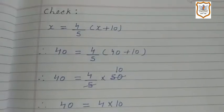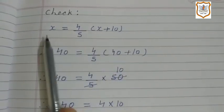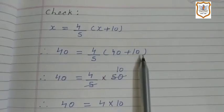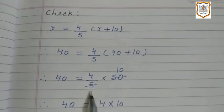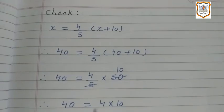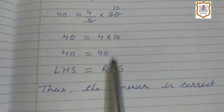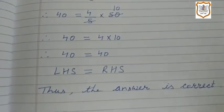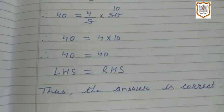Now we check our result. The equation is x = (4/5)(x + 10). We put x = 40. So we write 40 = (4/5)(40 + 10). 40 + 10 = 50. So 40 = (4/5) × 50. 50 divided by 5 is 10, so 40 = 4 × 10 = 40. So 40 = 40. Left hand side equals right hand side, thus the answer is correct. Students, the remaining equations you have to solve yourself. Exercise 2.3 is completed. We will continue this chapter in the next video. Thank you.